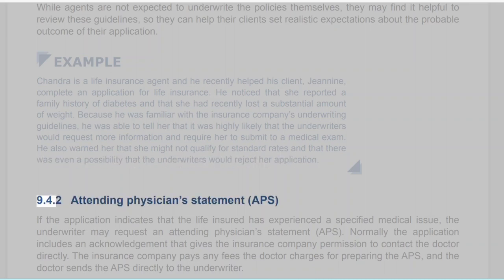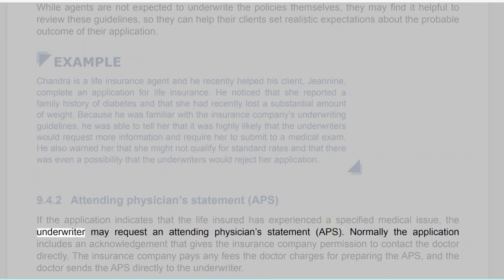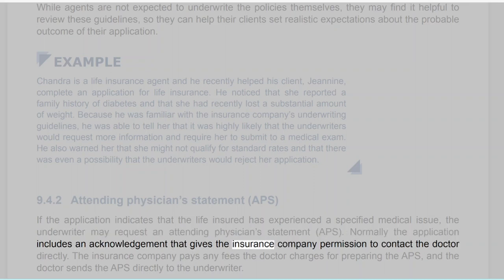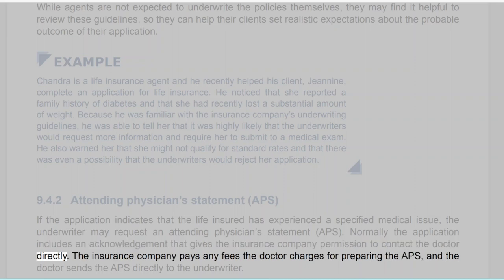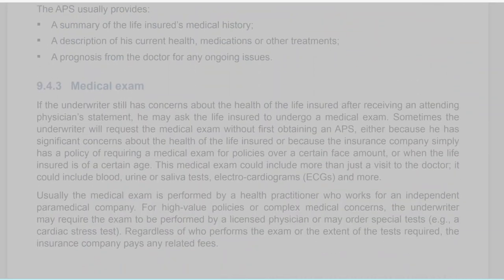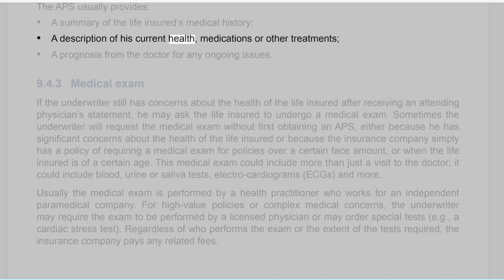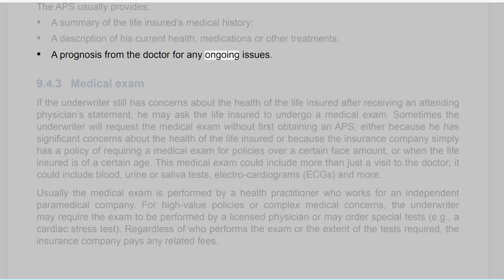Section 9.4.2: Attending Physician Statement (APS). If the application indicates that the life insured has experienced a specified medical issue, the underwriter may request an Attending Physician Statement (APS). Normally the application includes an acknowledgement giving the insurance company permission to contact the doctor directly. The insurance company pays any fees the doctor charges for preparing the APS, and the doctor sends the APS directly to the underwriter. The APS usually provides a summary of the life insured's medical history, a description of his current health, medications, or other treatments, and a prognosis from the doctor for any ongoing issues.